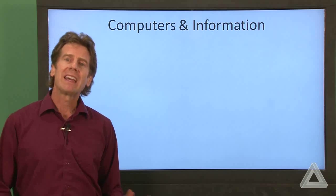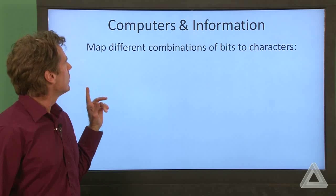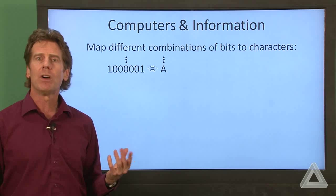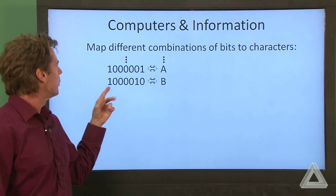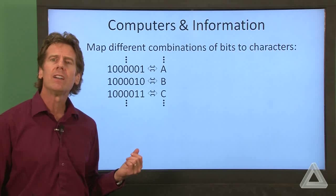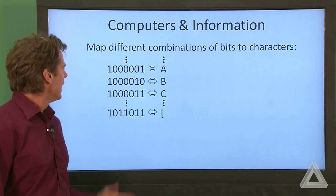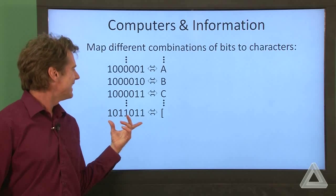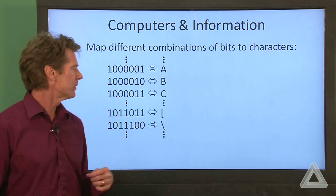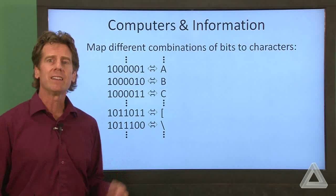Okay, so we want to map characters to bits. And we just need to agree on what that mapping is. So how about if one followed by five zeros and another one maps to the character A. And then we could have one followed by four zeros, one zero, that's the character B. And we can continue on one with four zeros, two ones, that's a C. And on through the alphabet. And we could get to the punctuation marks where this combination of bits is equal to the left bracket, this combination of bits is equal to backslash, and so on. So provided we all agree what this mapping is, we can write English.